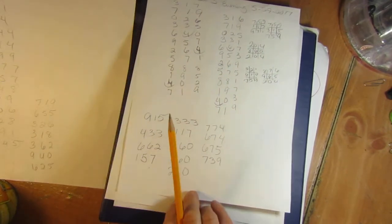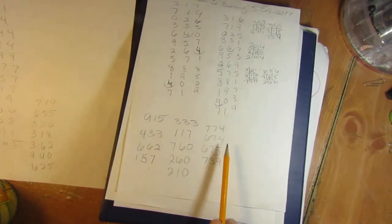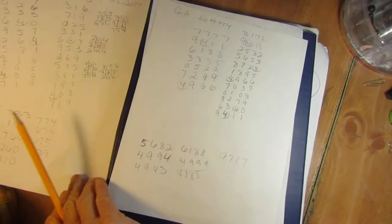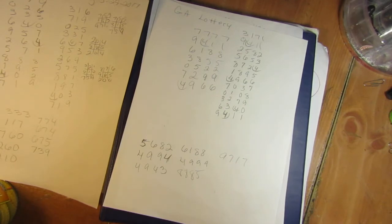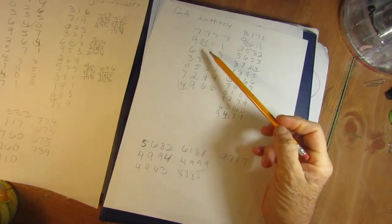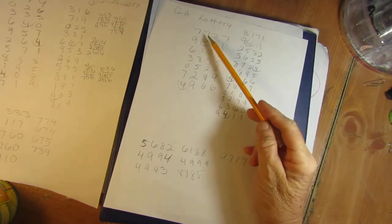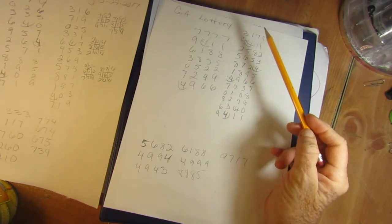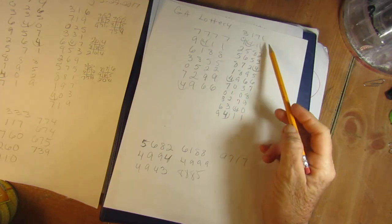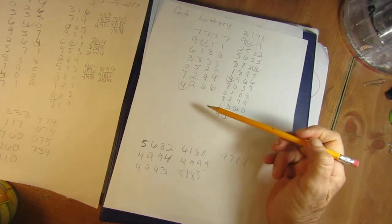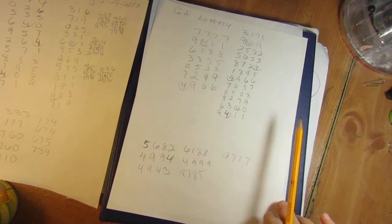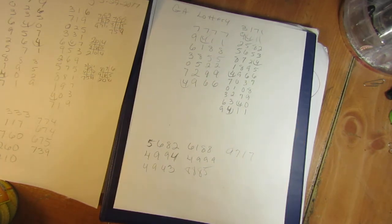Let's go to Pick 4 for Georgia. Y'all's last number was 9-4-1-1. I used the 7-7-7-7 method and the 3-1-7-1 method. I found out my other method, the 6-4-8-6 method, today for some reason it ain't working for y'all, so we're going to try a different method for this evening.